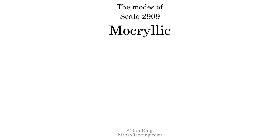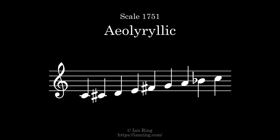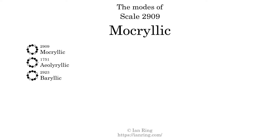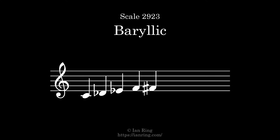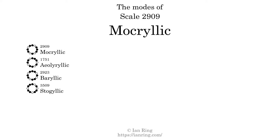This scale has eight modes. The first mode is itself. The second mode is scale 1751, also known as Ilarillic. It sounds like this. The third mode is scale 2923, also known as Barillic. It sounds like this. The fourth mode is scale 1901, also known as Ilarillic. It sounds like this.